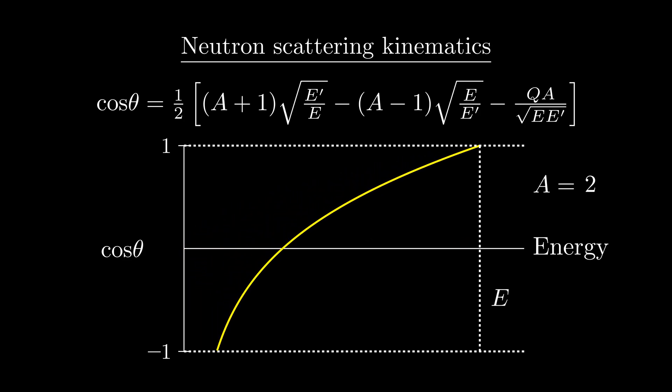Let's bump A from 1, the value corresponding to a proton, to 2. Here, we can see that it's still possible for the neutron to lose zero energy and continue on its original path, but it's not possible for it to lose all of its energy. The lowest possible energy the neutron can leave with comes when the cosine of the scattering angle is negative 1, which means the neutron bounces back in the opposite direction from which it came.